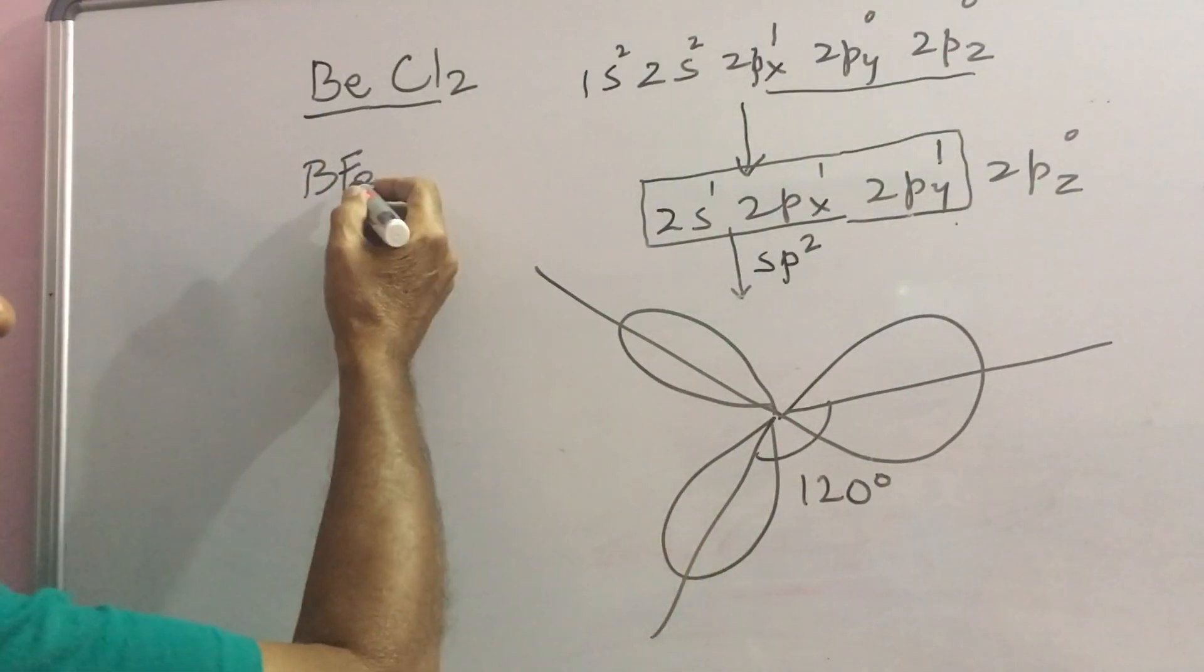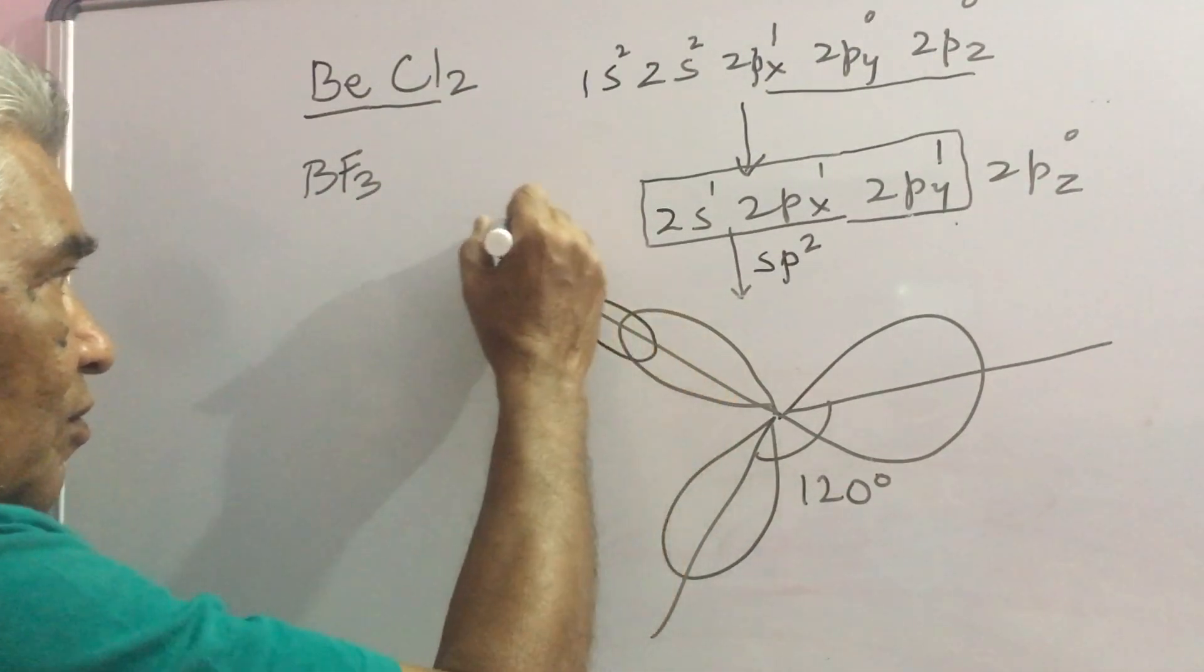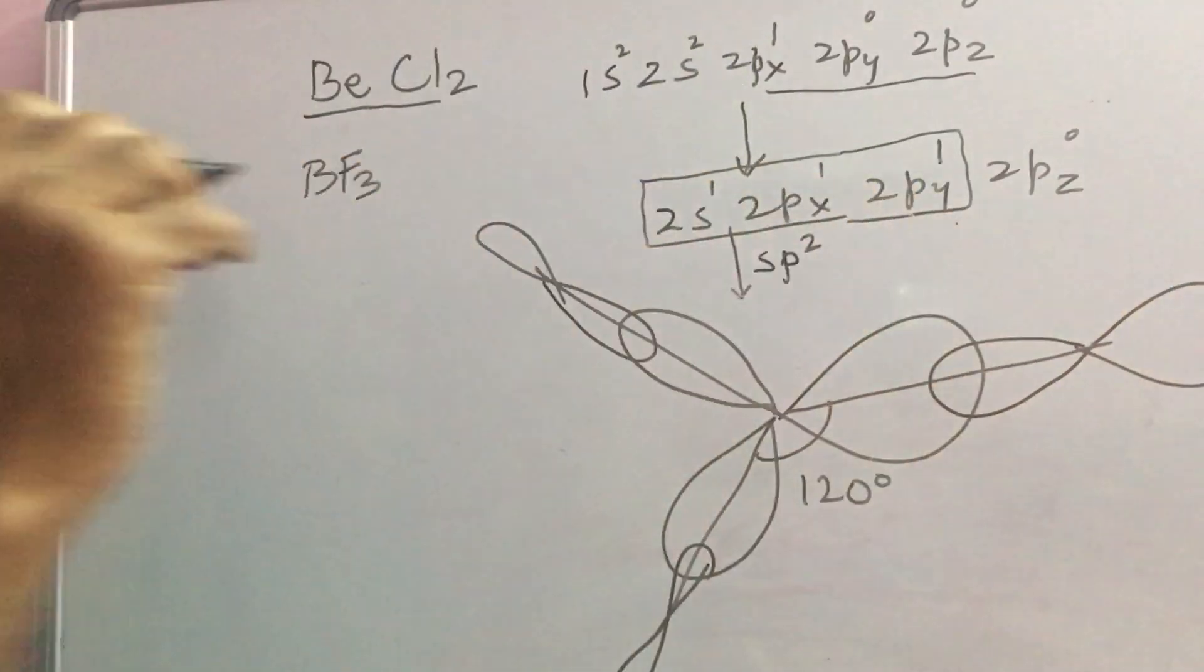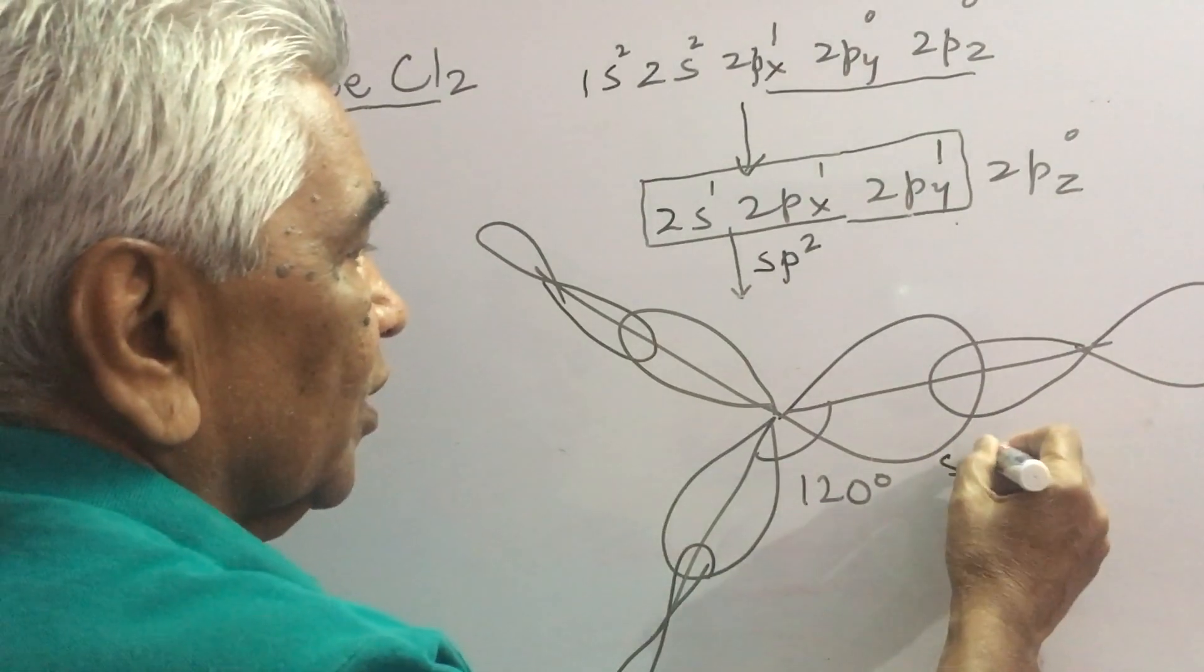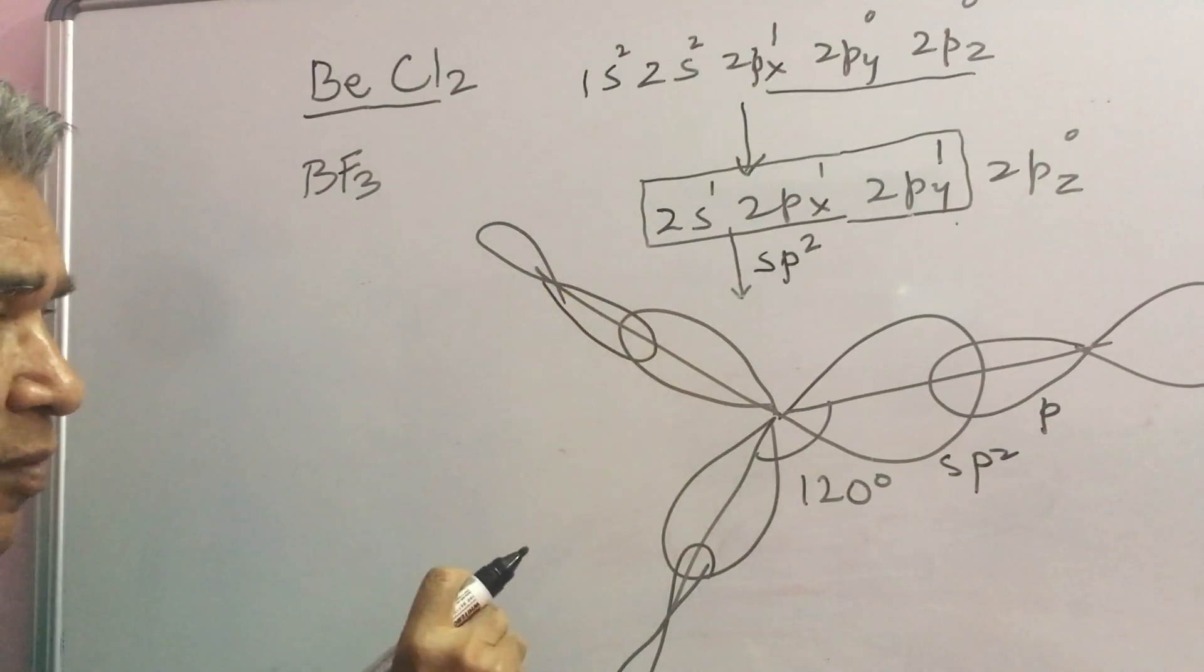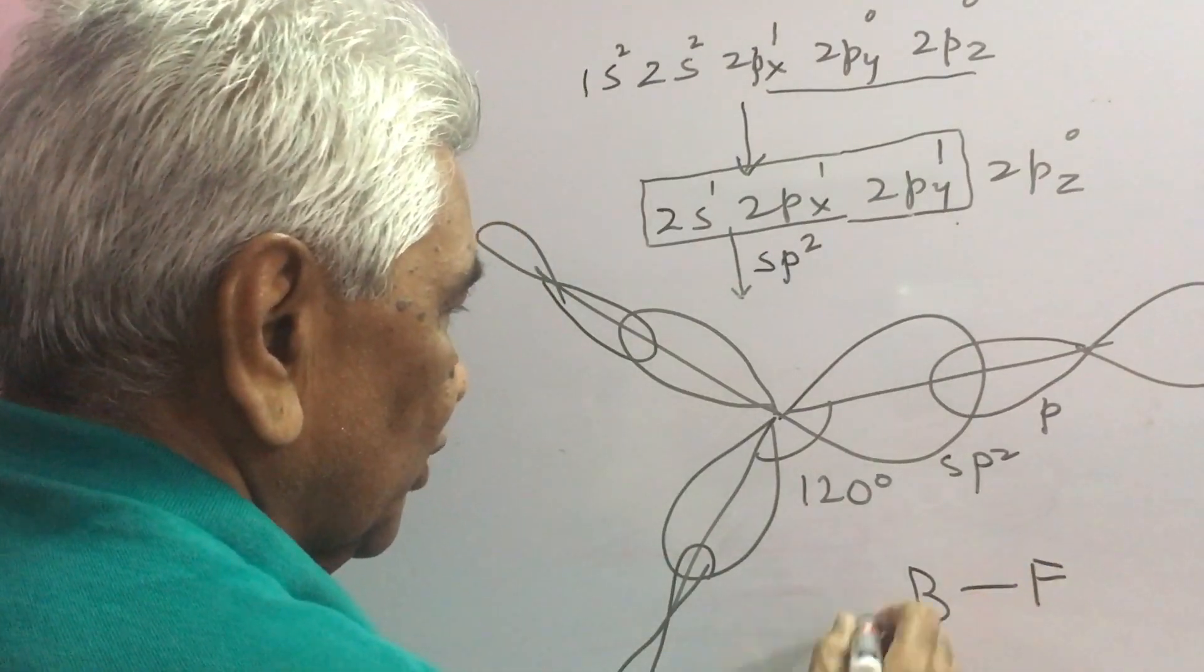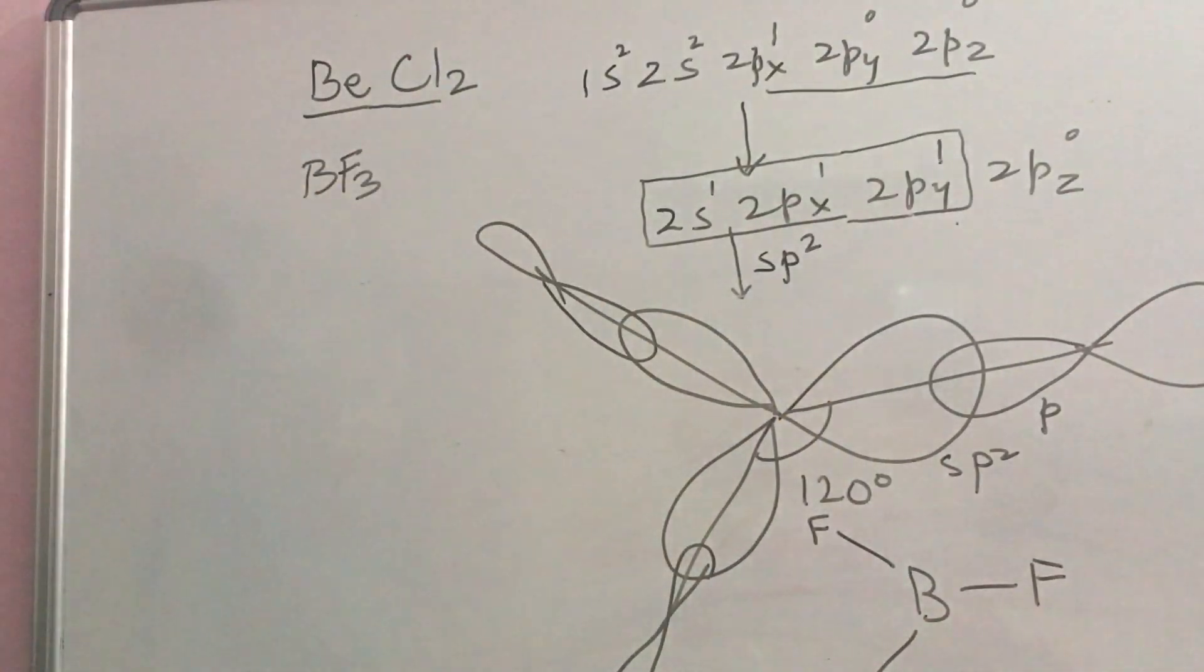2s and 2p forming this at 120 degree. Three F atoms with their p orbitals overlap with these three sp2. This is sp2-p overlap, sp2-p overlap, sp2-p overlap and we get BF3 molecule. So, this explains why boron is trivalent.